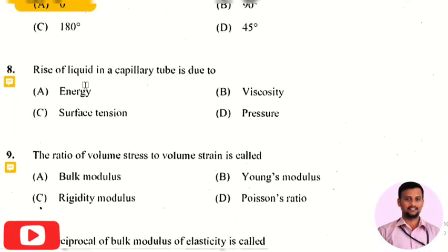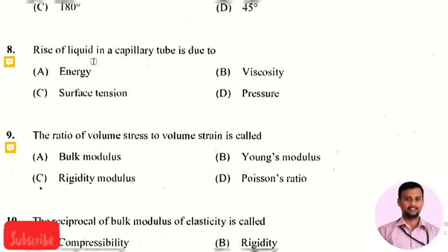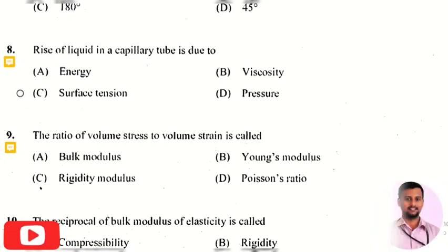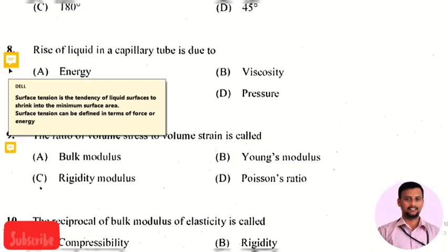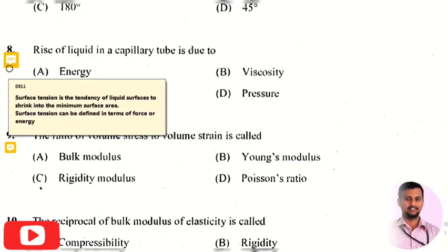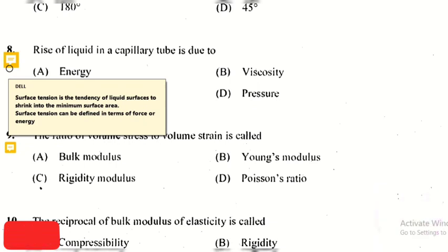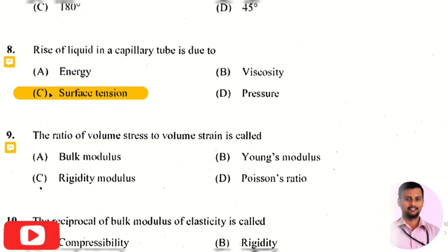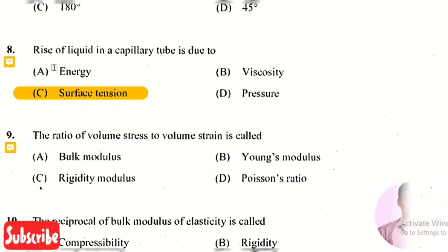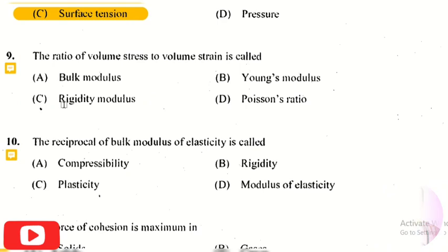The next question: the rise of liquid in a capillary tube is due to? The answer is surface tension. Surface tension is the tendency of a liquid surface to shrink into the minimum surface area. Therefore, the rise of liquid in a capillary tube is due to surface tension.